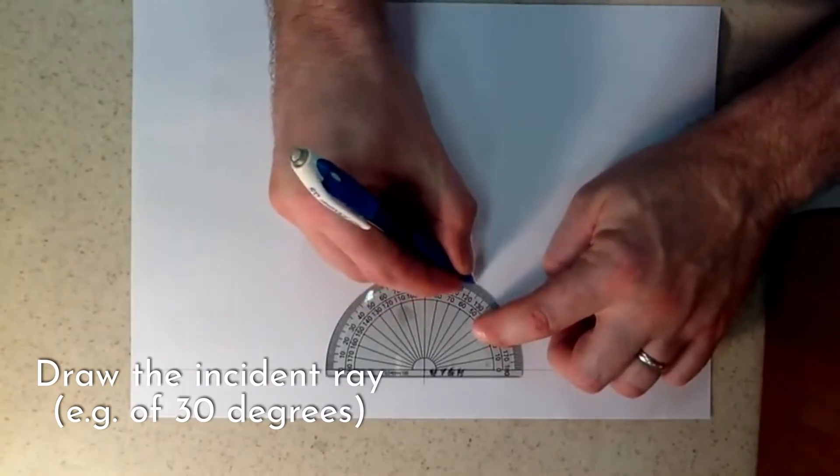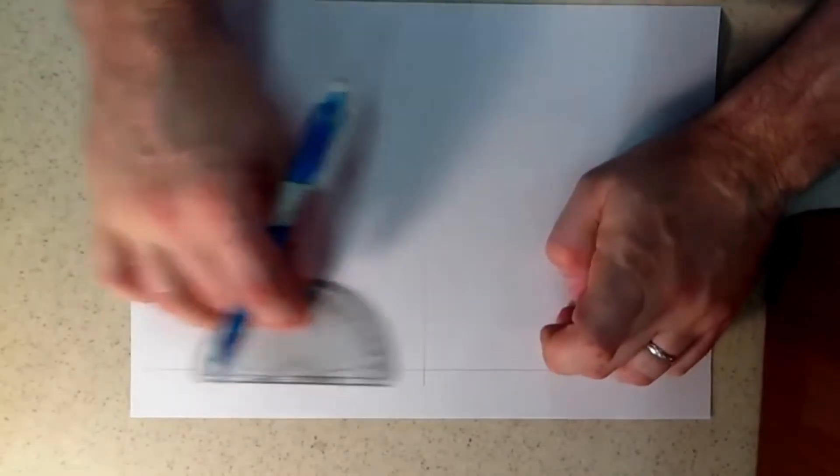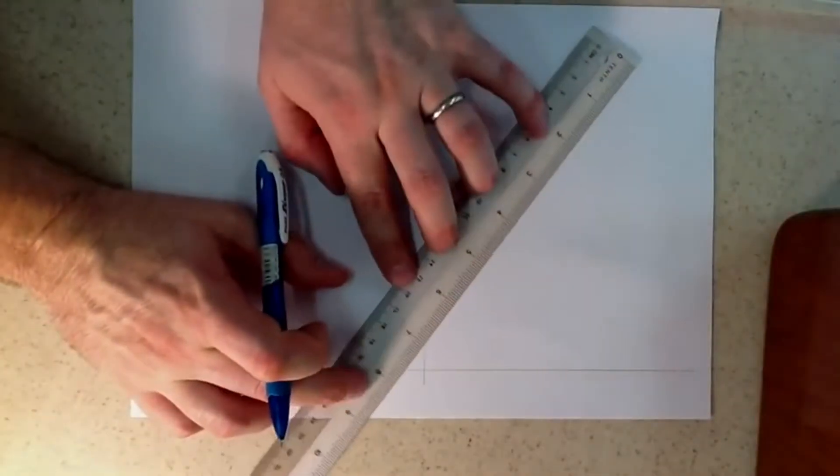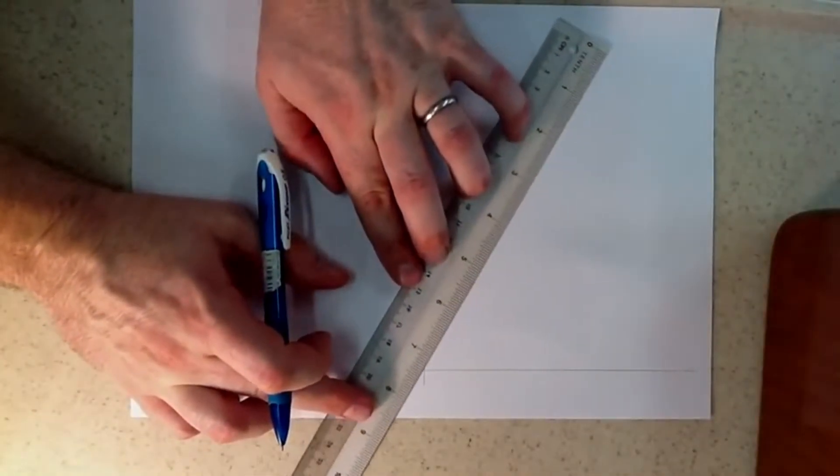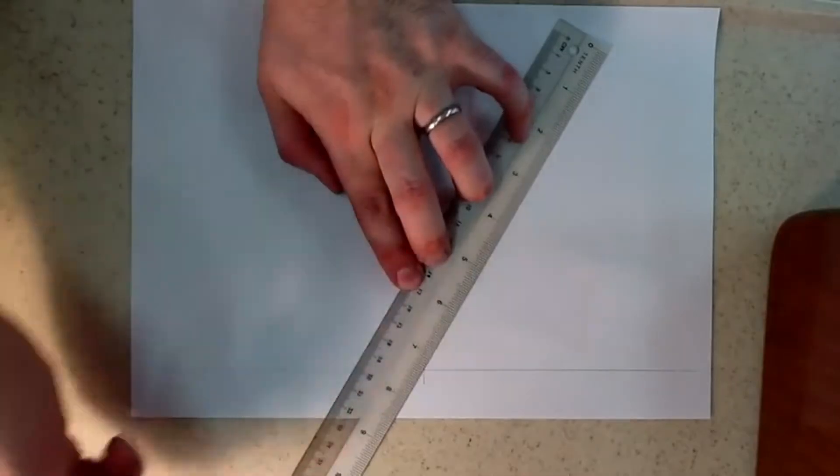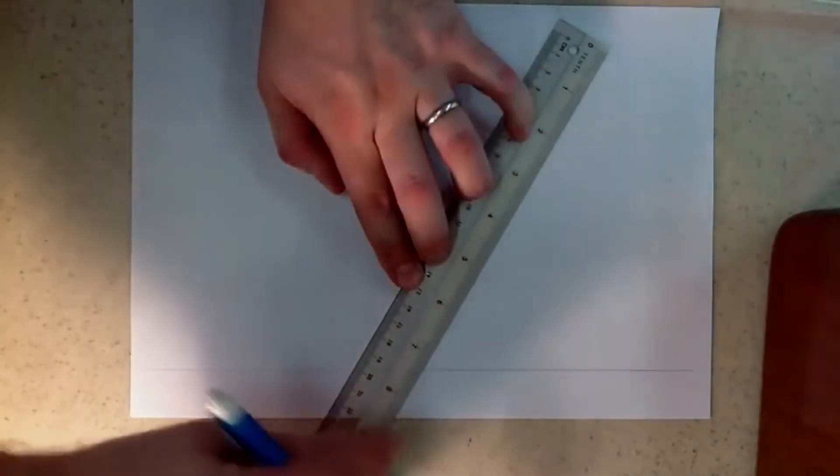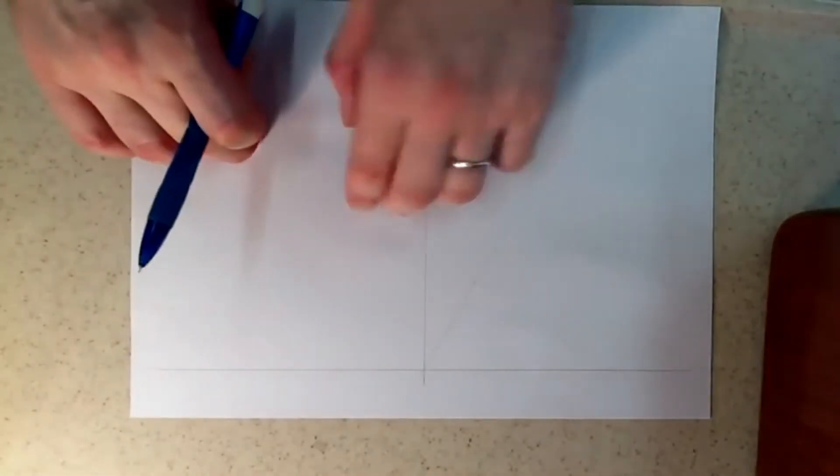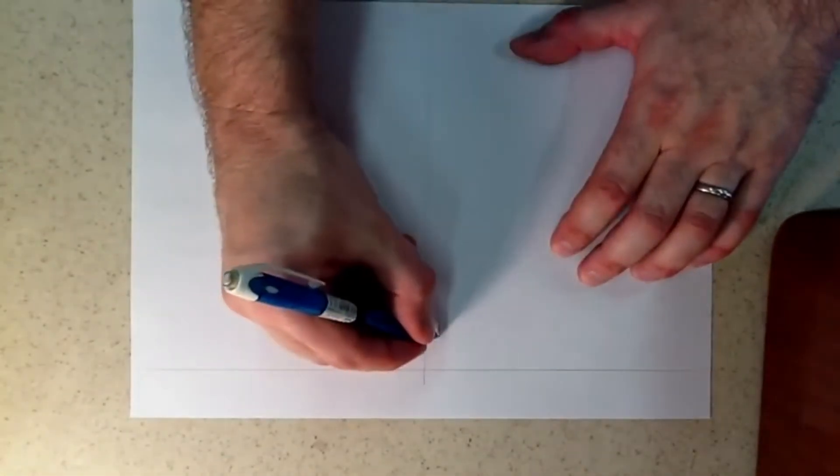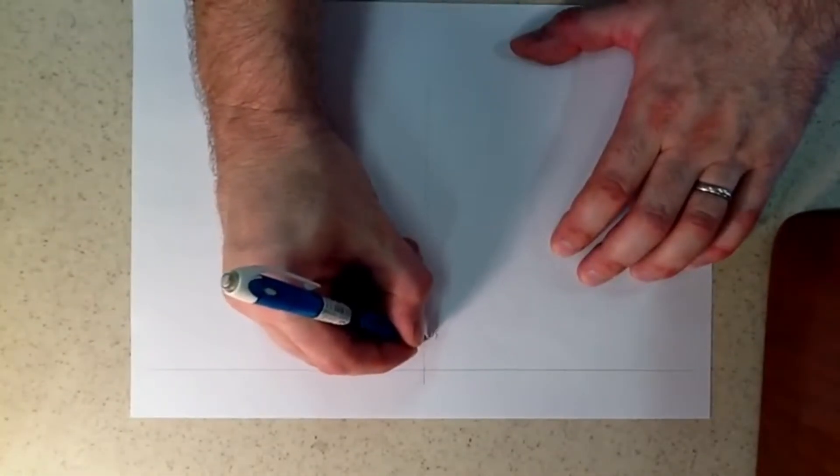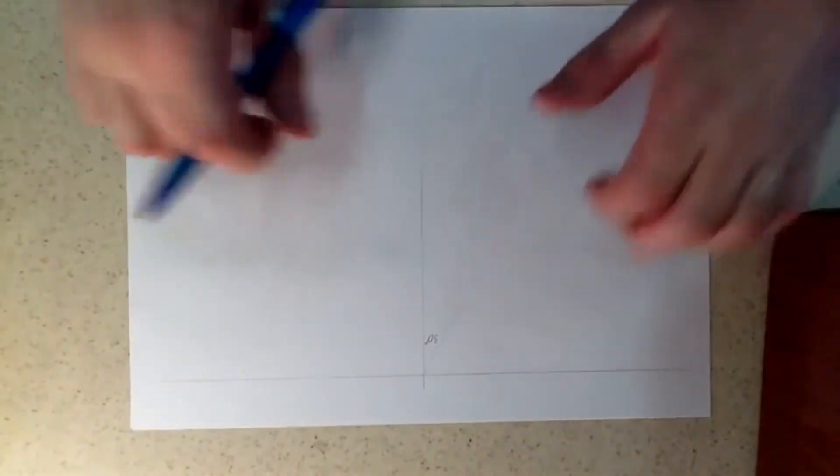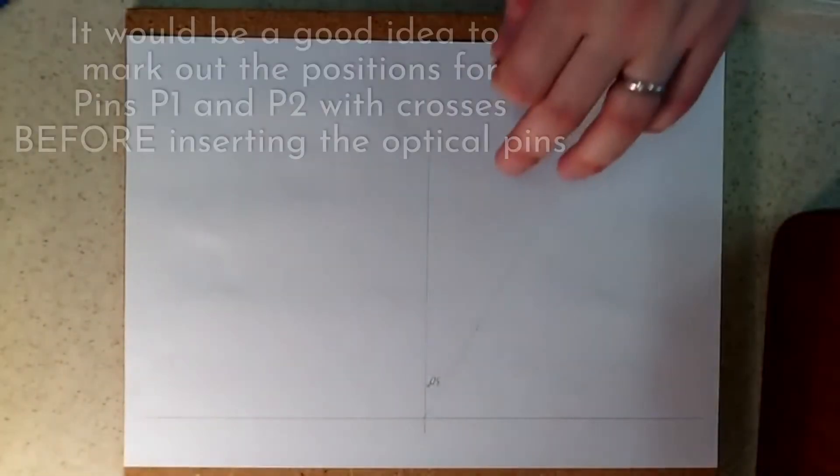From here we are going to draw the first angle of incidence. I measure using a protractor, draw a long line. It is a good idea to indicate the angle. You will be drawing several lines on your piece of paper.